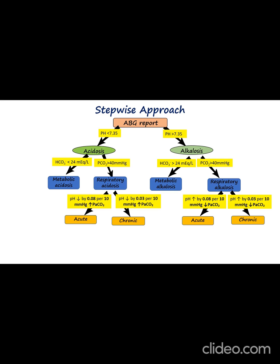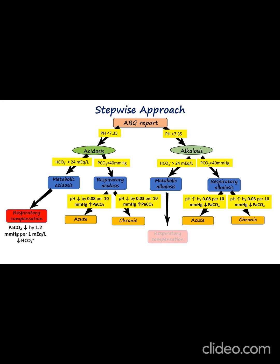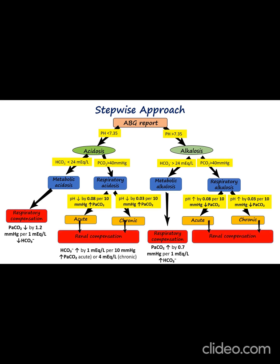Next, we assess whether the compensation is appropriate. If it is not, that might point to a mixed disorder. Keep in mind, respiratory disorders are compensated by the kidneys adjusting bicarbonate, while metabolic disorders are compensated by the lungs adjusting carbon dioxide through changes in breathing.